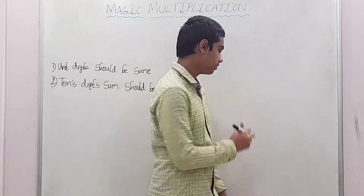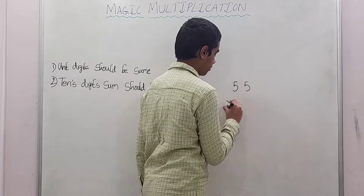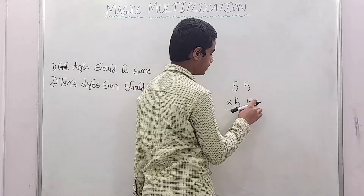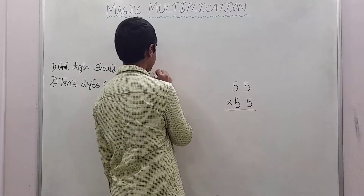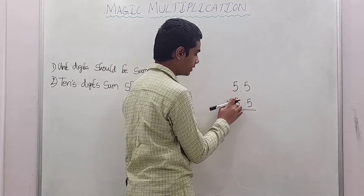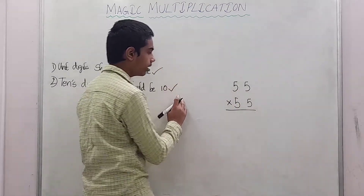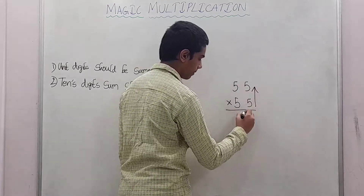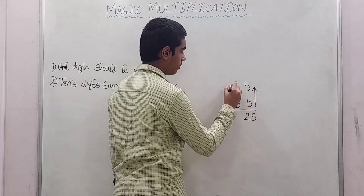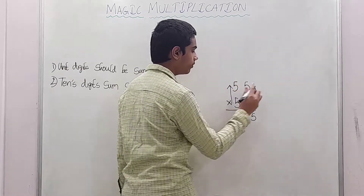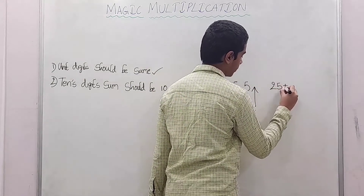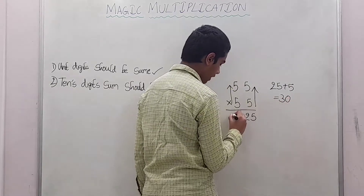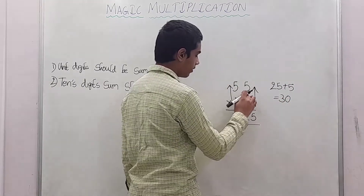Let's take another example: 55 into 55. First rule, unit place digit should be same: 5 and 5 — satisfied. Second rule, 10th place digit sum should be 10: 5 plus 5 equals 10 — satisfied. First step: multiply unit place digit numbers — 5 into 5 is 25. Come to the 10th place: 5 into 5 is 25, plus unit place digit down number 5: 25 plus 5 is 30. So write 30.